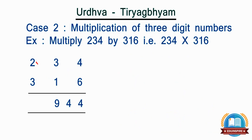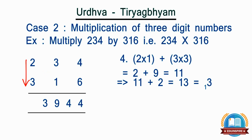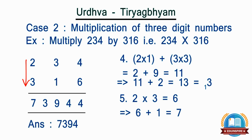Step 4: take the first 2 digits of the numbers and multiply diagonally, i.e. 2 by 1 and 3 by 3, the sum of which becomes 11, and add the carried over number, i.e. 2, to it. So the total becomes 13. We will retain 3 as the fourth digit of the answer and carry 1 to the left. Step 5: take the first digits and multiply vertically, i.e. 2 by 3, which becomes 6, and add the carried over number, i.e. 1, to it. So the total becomes 7. It becomes the fifth digit of the answer and the final answer becomes 7, 3, 9, 4, 4.